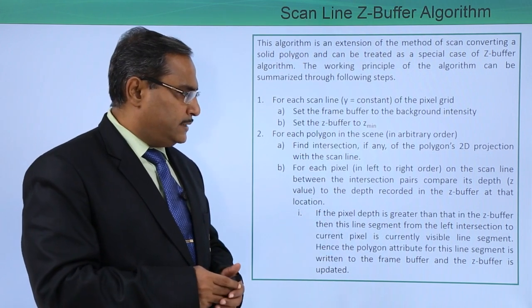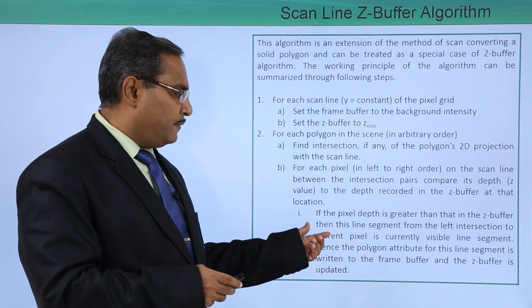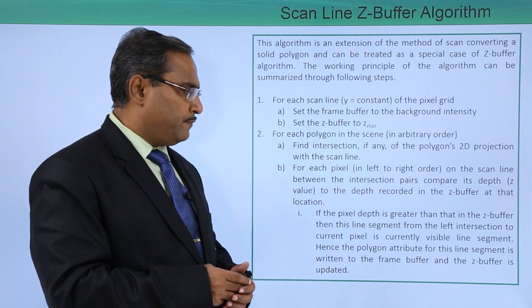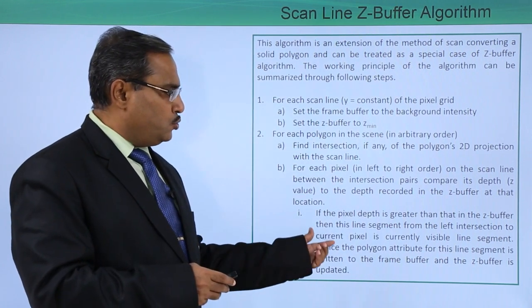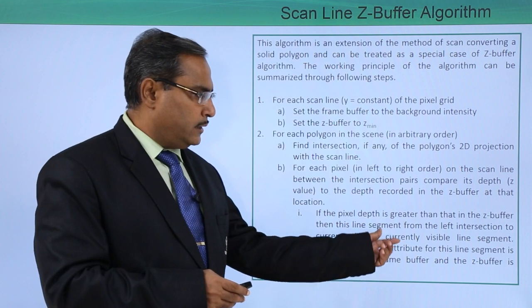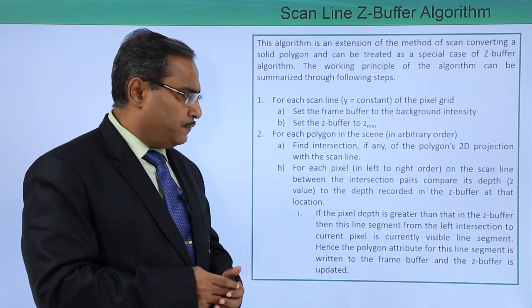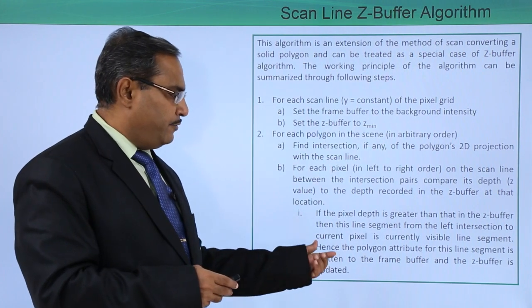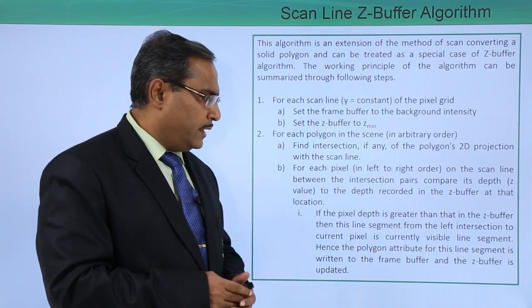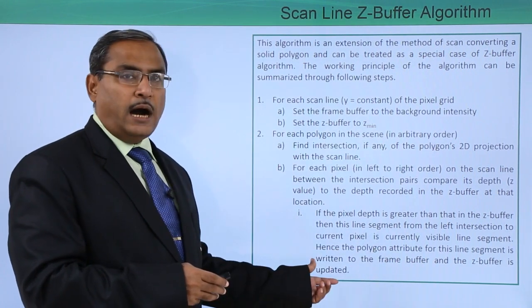If the pixel depth is greater than that of the z-buffer, then this line segment from the left intersection to the current pixel is currently visible. Hence, the polygon attribute for this line segment is written to the frame buffer and the z-buffer is updated.